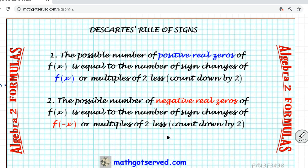For number two: the possible number of negative real zeros of a function is equal to the number of sign changes of f(−x). So the difference is that for positive real zeros we look at sign changes for f(x), but for negative real zeros we look at f composed with negative x — the number of sign changes of f(−x), or multiples of two less, also counting down by twos.